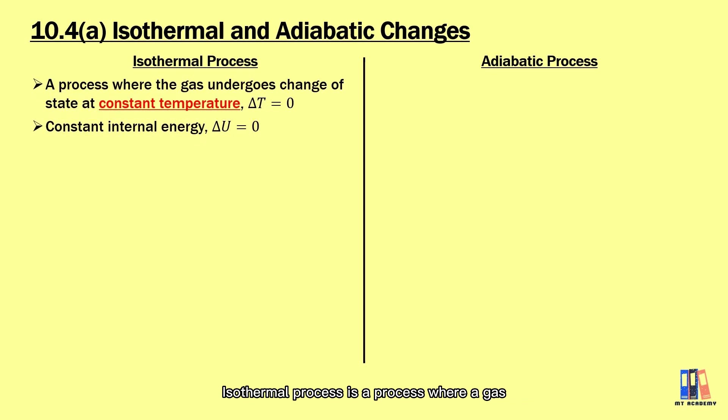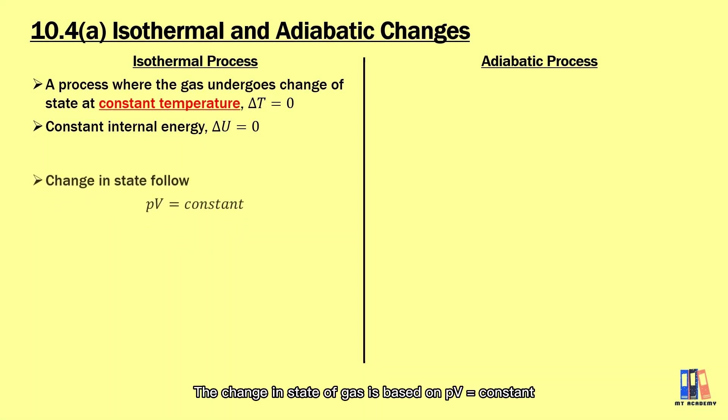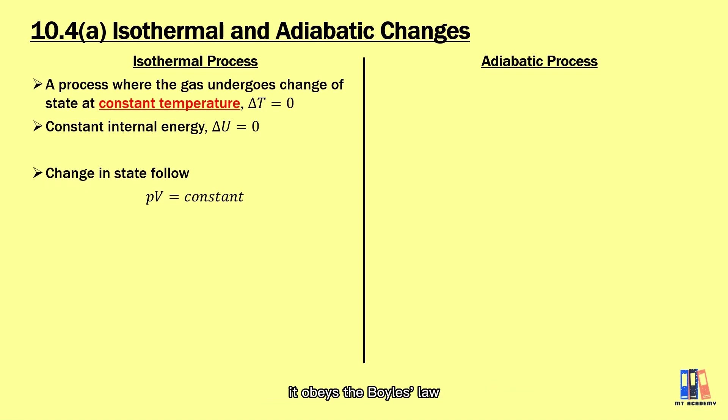Isothermal process is a process where the gas undergoes change of state at constant temperature. Since the internal energy of gas depends on the temperature, so it is constant that delta U is zero during isothermal process. The change in state of gas is based on PV as the constant. In other words, it obeys the Boyle's law and the pressure is inversely proportional to the volume of gas.